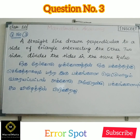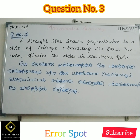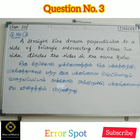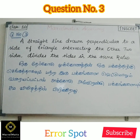Question number 3: A straight line drawn perpendicular to one side of a triangle, intersecting the other two sides, divides the sides in the same ratio.